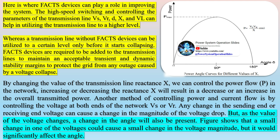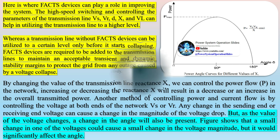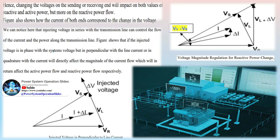Power flow has always relied on generator control, voltage regulators using tap changers, phase shifting transformers, and reactive power plant compensation. FACTS devices can control the power flow by controlling the main parameters of any transmission line: 1. Line impedance, 2. Phase angle, 3. Voltage magnitude. In addition, FACTS devices can also be used to increase the stability of the network and regulate its voltage.